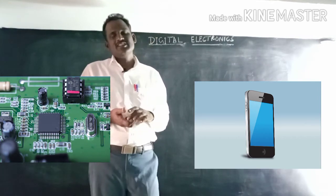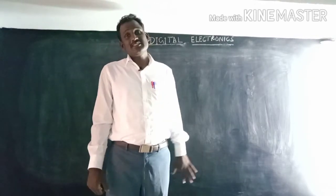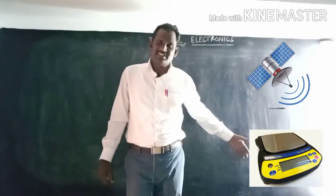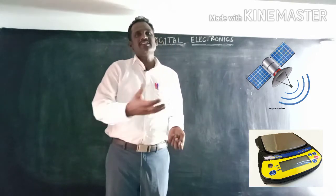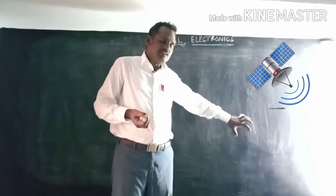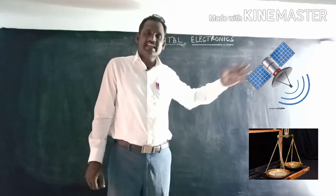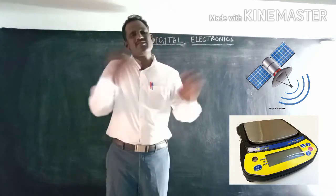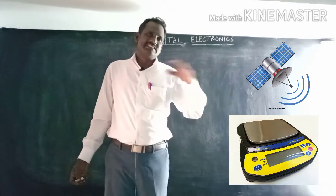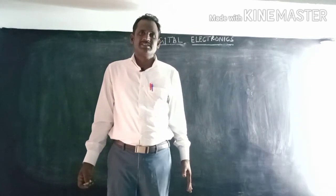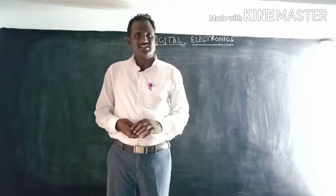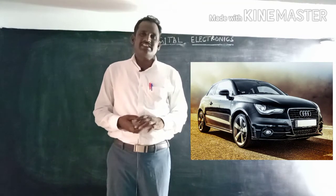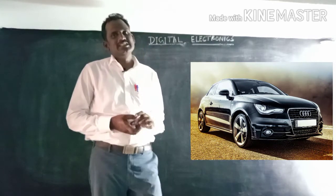These are the wide-ranging applications of digital electronics — from satellites all the way down to the digital weighing machines used in vegetable shops, replacing the old analog balance scale. It is also used in cars for control applications. It all depends upon the designer how they choose to use digital electronics.